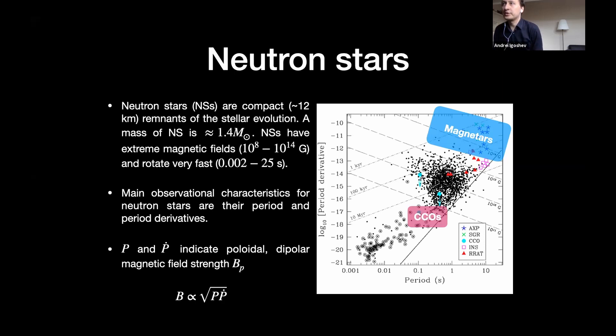So I'll start with introducing neutron stars briefly. If you have a massive star at the end of its evolution, it goes into a supernova. In the center of this massive star, you have a core which collapses and forms a neutron star with a typical size something like 12 kilometers and mass something like 1.4, maybe sometimes two solar masses. Neutron stars are especially famous for their huge magnetic fields ranging from 10 to the 8 to 10 to the 14 gauss, and these neutron stars usually rotate very fast. The shortest period is around 2 milliseconds.